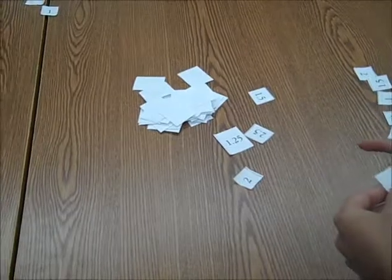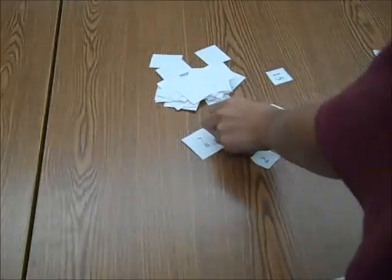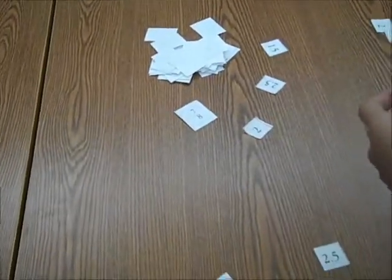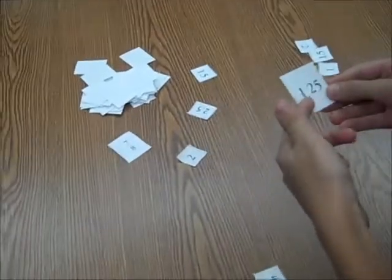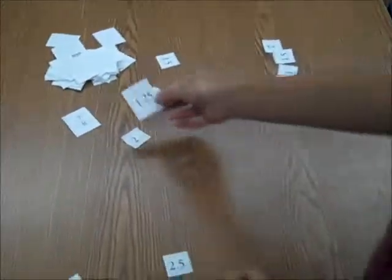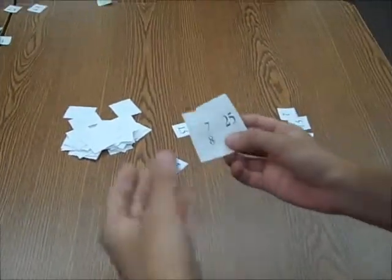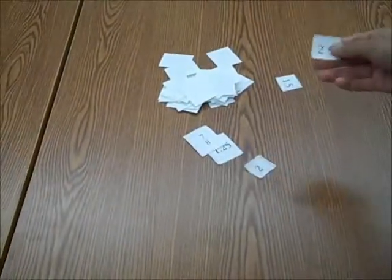So, 7 eighths is almost a whole. And then this is 1 point and a quarter. So if almost one whole plus one whole and a quarter would equal about two wholes and a quarter. Technically, she would be the closest one. So she would get both cards.